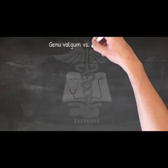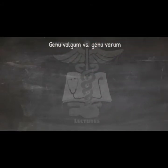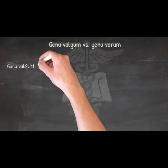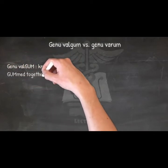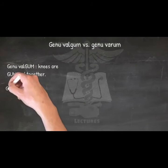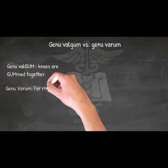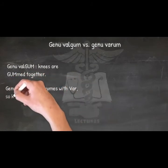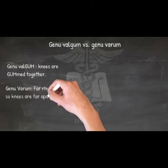Genu valgum versus genu varum. Genu valgum: knees are 'gummed' together. Genu varum is the other by default — 'far' rhymes with 'var,' so knees are far apart.